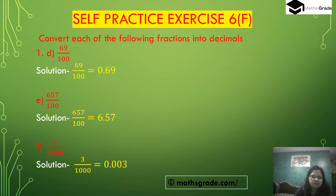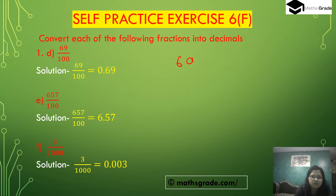Part d: 69 divided by 100. The denominator 100 has two zeros, so we place two digits after the decimal point. The numerator is 69, which has two digits, so counting two from the right we get 0.69.